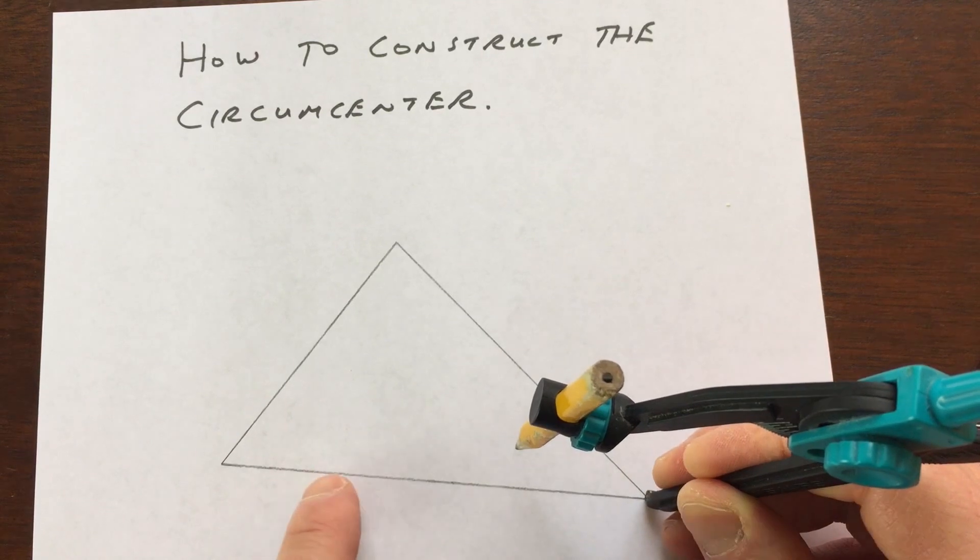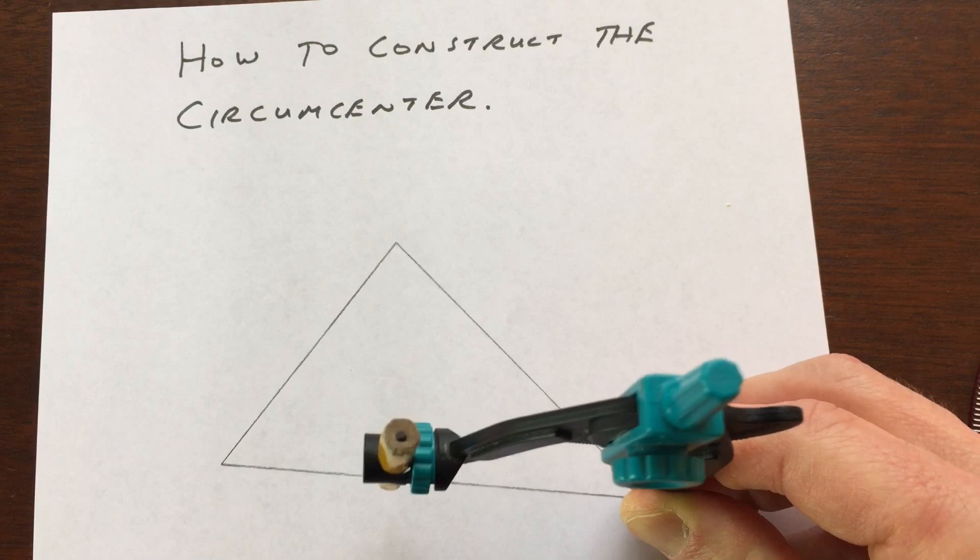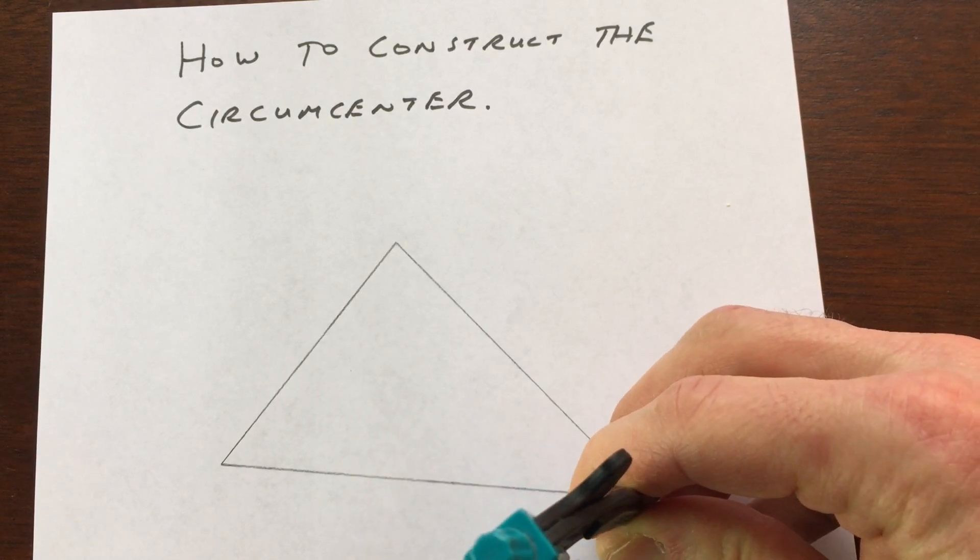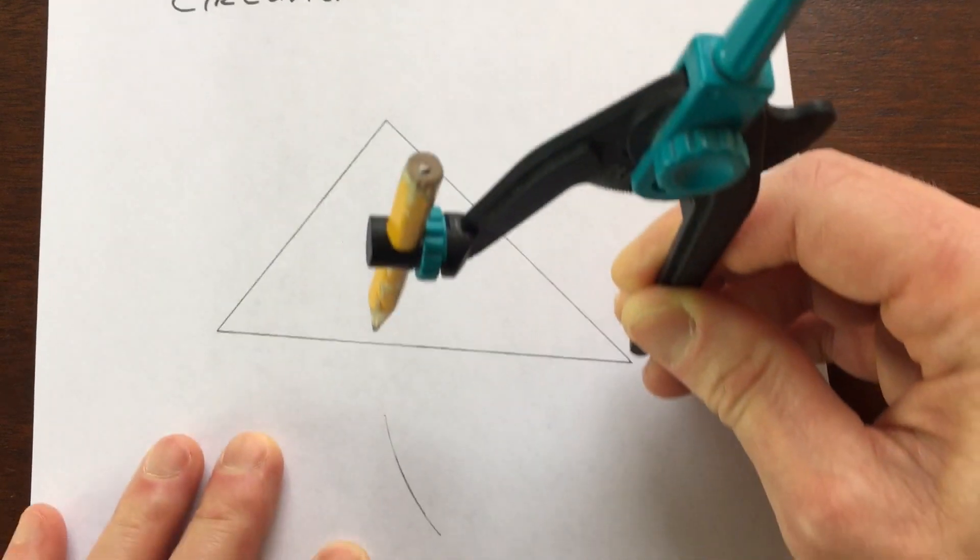If I want to find the perpendicular bisector of this side right here, you want to open the compass up more than halfway. That's the key. And what you want to do is draw an arc below that line segment, like that.